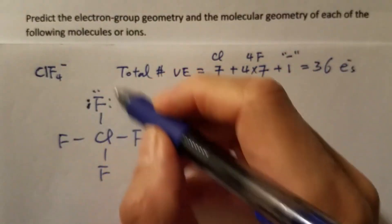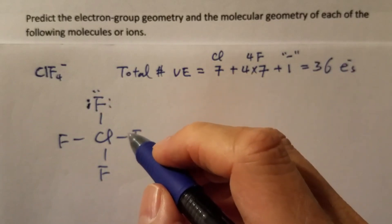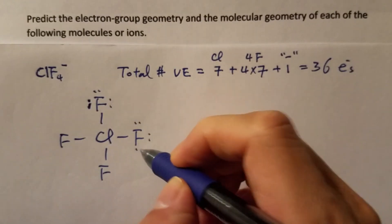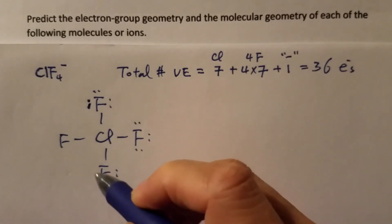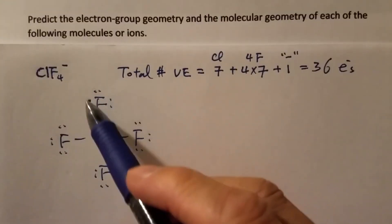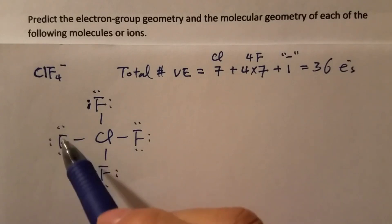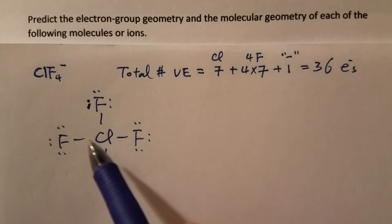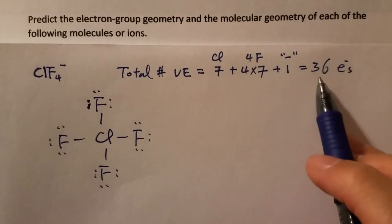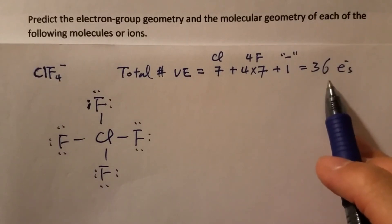This makes each fluorine satisfy the octet rule. Same thing with the other three fluorine atoms. Now if we count the total number of both bonding and non-bonding electrons, that's eight for each atom, and we have 32 so far. 36 minus 32, there's still four remaining unassigned valence electrons, so where do they go?